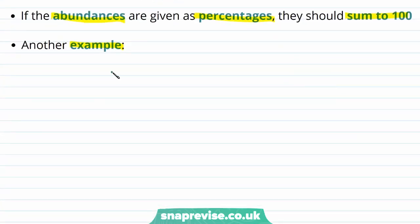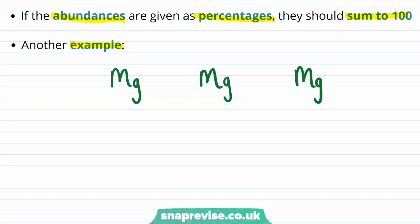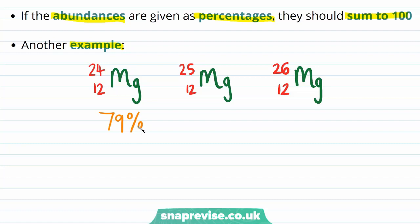The three isotopes of magnesium will all have the same atomic number, as they'll all be the same element and therefore have the same number of protons in the nucleus. For magnesium the number of protons is 12, and therefore all three isotopes have an atomic number of 12. The mass numbers are what differ between the isotopes: 24, 25, and 26. The isotope abundances are 79% for mass number 24, 10% for mass number 25, and 11% for mass number 26.